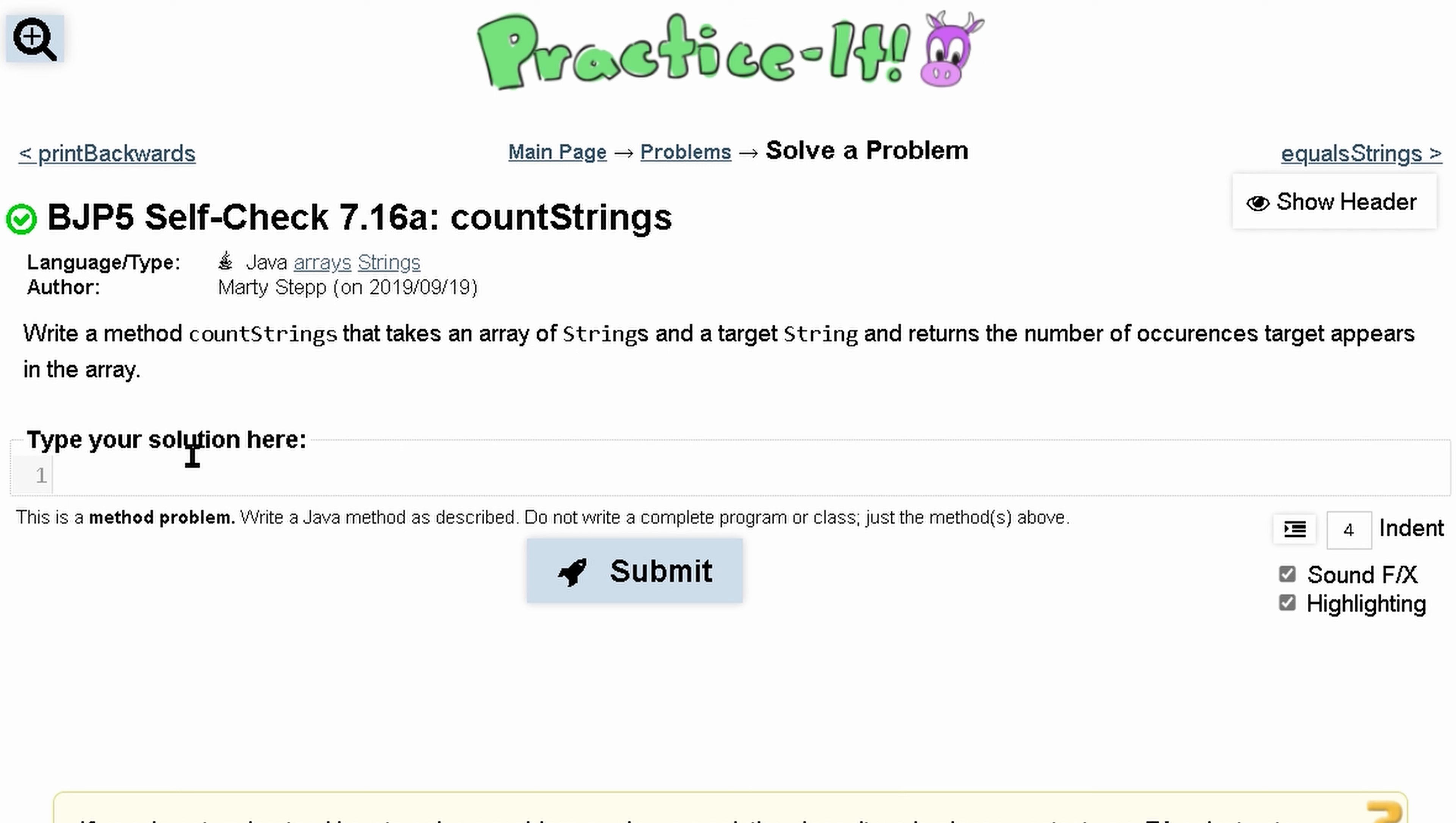It can sound a little confusing at first, but essentially we have an array we want to look through, and we also have a word. If that word appears in the array, we're going to increment a counter. At the end, we want to see how many times this word has appeared in the array, so we're just going to return that.